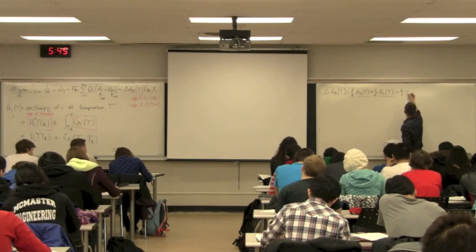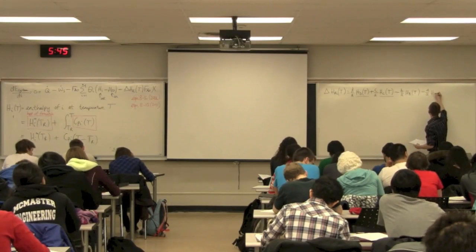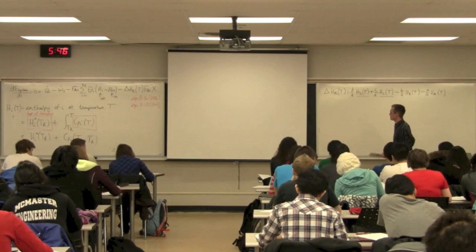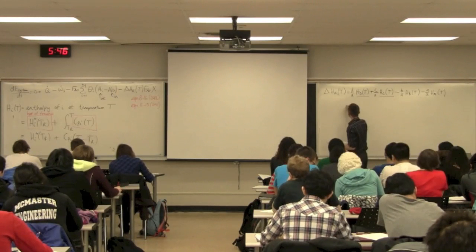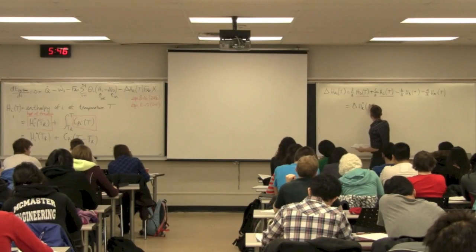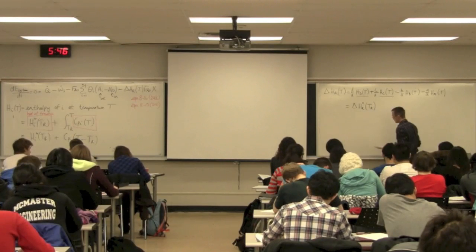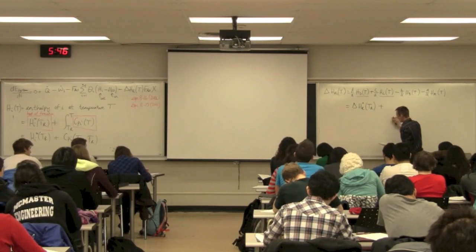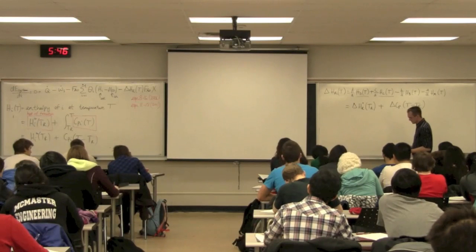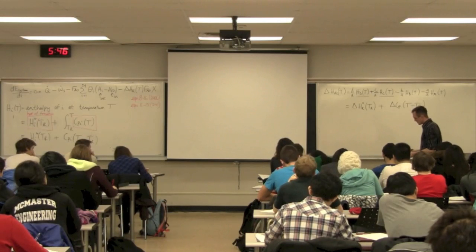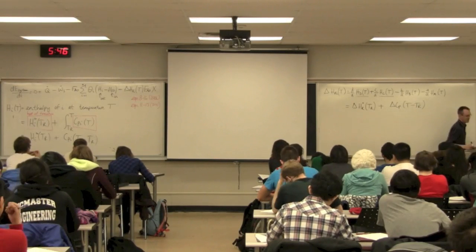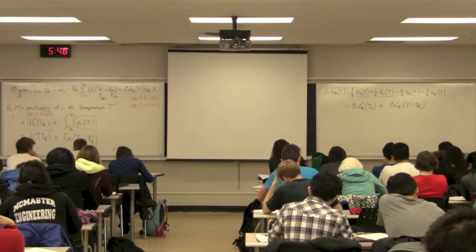Substituting in the enthalpy expressions, we can write the heat of reaction at temperature T as: delta_Hrxn(T) = delta_Hrxn(TR) + delta_Cp × (T − TR), where TR is 298 Kelvin. Delta_Cp is the change in heat capacities accounting for the stoichiometric moles on both sides of the reaction expression — and that definition is written on the first page of your handout.